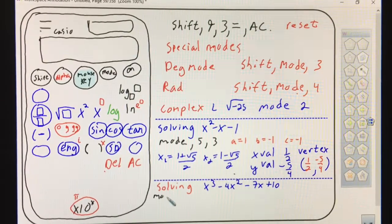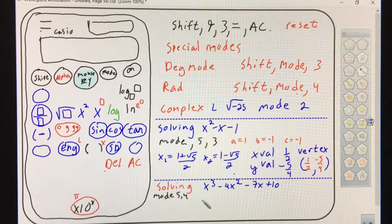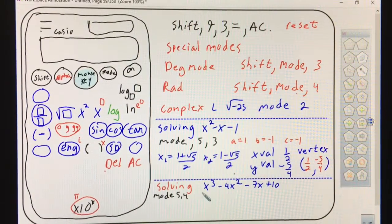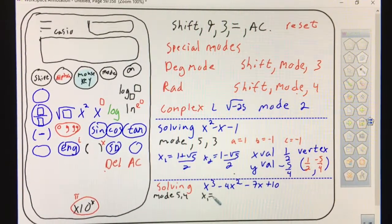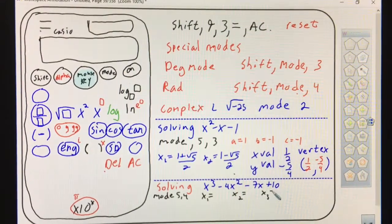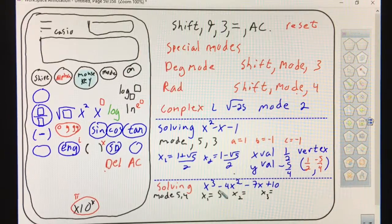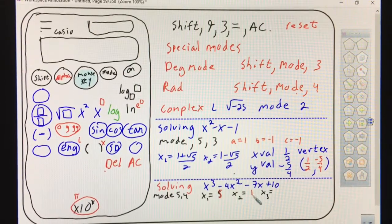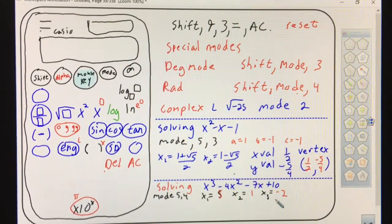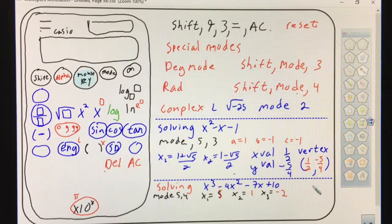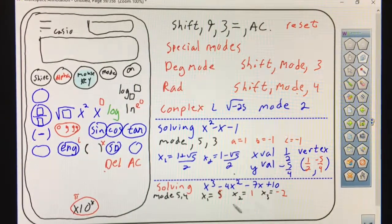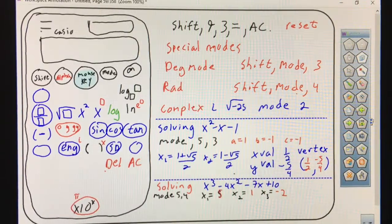Mode five four. Type in the coefficients and it'll give you x one equals, x two equals, and x three equals. Remember the linear factors would be the opposite. You would put x minus five, x minus one, x plus two in parentheses.